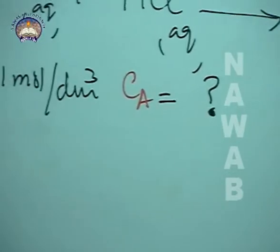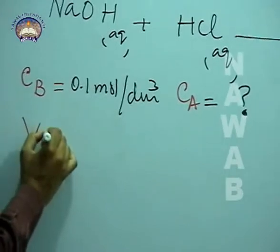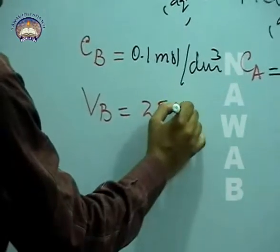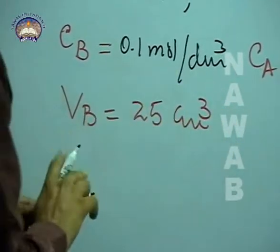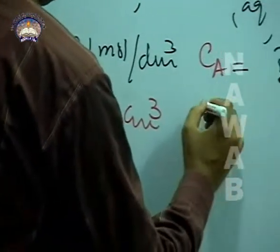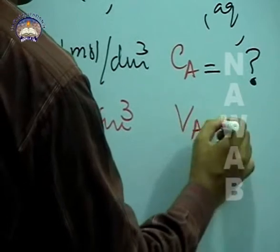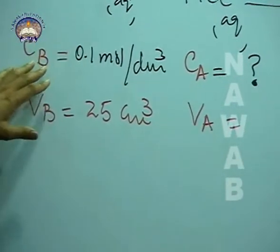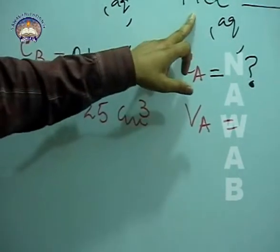Volume of base, it will tell itself, suppose this is 25 cm cube. This volume of acid we find by doing experiment. This is an unknown concentration acid solution.